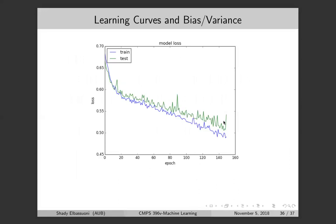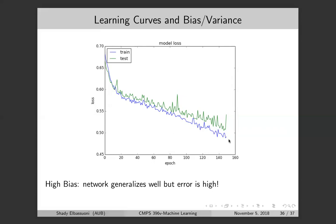Here's an example learning curve for a neural network showing test and train errors. Does this have high bias or high variance — is it overfitting or underfitting? The training and test errors are tracking each other, which suggests underfitting. Both errors are high — around 0.50 — so it's high bias. It generalizes well but the error is high. In this case I could use a deeper neural network. Always use the learning curve to guide hyperparameter tuning.